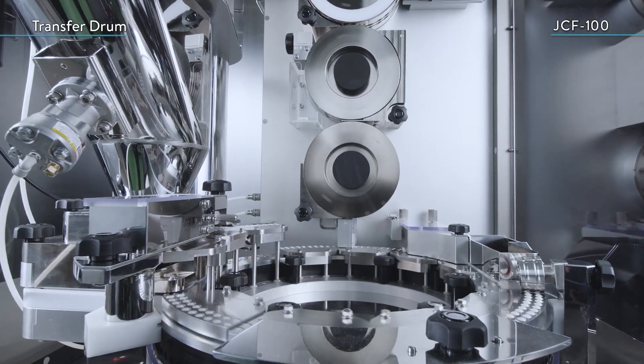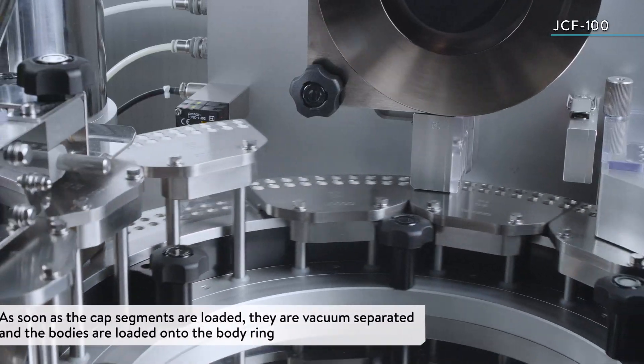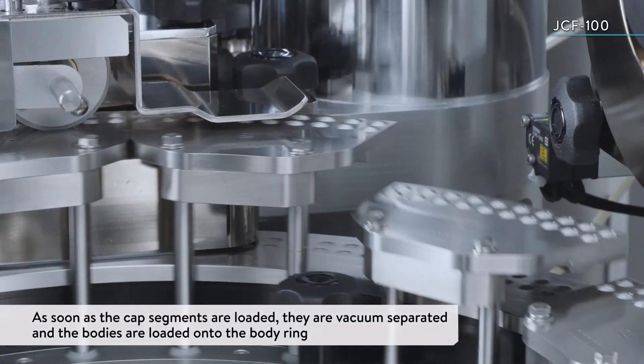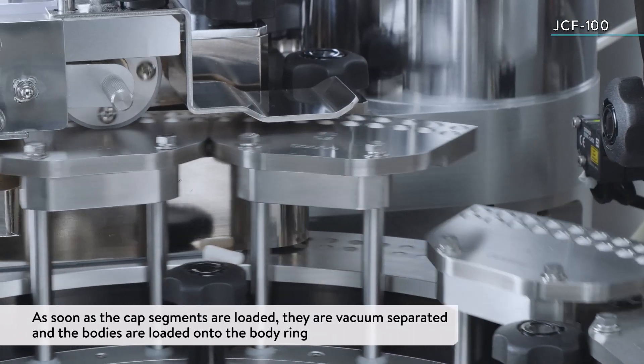The capsules aligned in the transfer drum are vacuum-separated while being loaded into the cap segments, and the bodies are loaded onto the body ring.